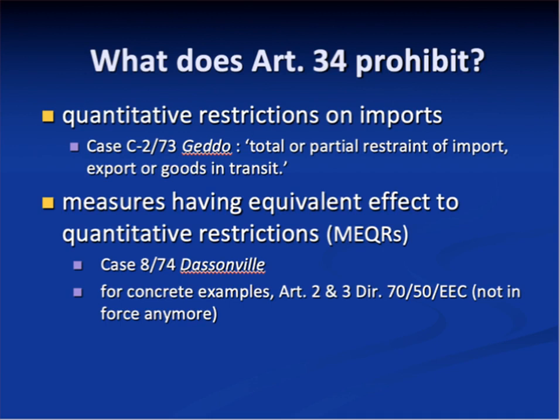Article 34 prohibits quantitative restrictions and measures having equivalent effects to quantitative restrictions. Quantitative restrictions are defined in the Geddo case, a very early case from the 1970s, as anything that is a total or partial restraint of import, export or goods in transit. Measures having equivalent effect to quantitative restrictions are defined in the Dassenville case, which I'm going to discuss further in a minute.